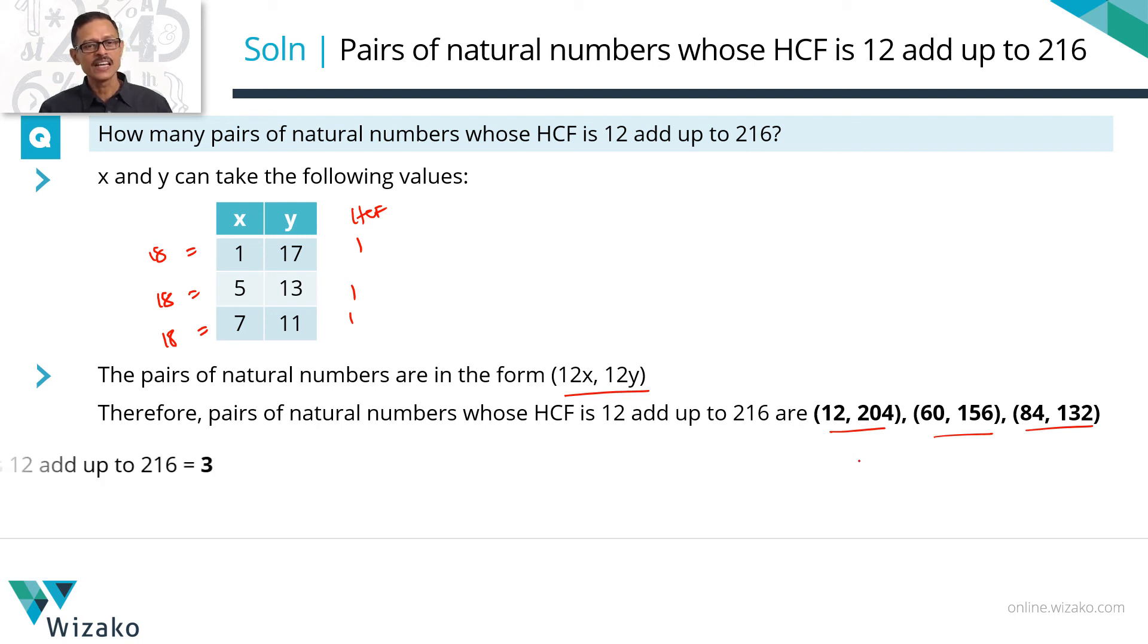So these are the 3 pairs of numbers which will add up to 216 and will have an HCF of 12. So answer is 3 pairs of numbers. As we found in the last slide, choice B is the correct answer to this question.